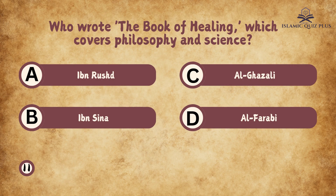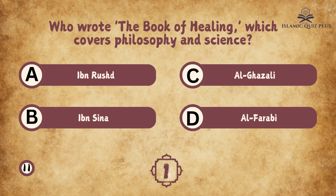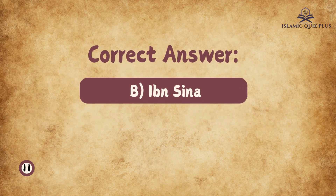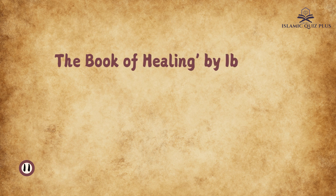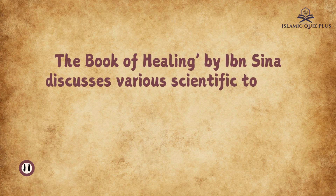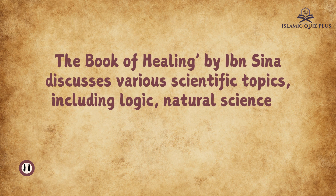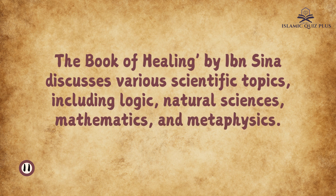Question 11: Who wrote The Book of Healing, which covers philosophy and science? A. Ibn Rushd, B. Ibn Sina, C. Al-Ghazali, D. Al-Farabi. The correct answer is B. Ibn Sina. The Book of Healing by Ibn Sina discusses various scientific topics, including logic, natural sciences, mathematics, and metaphysics.